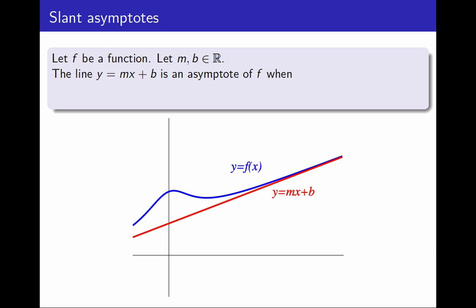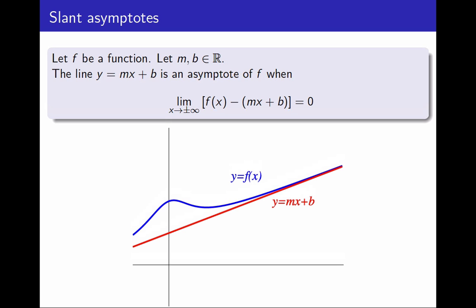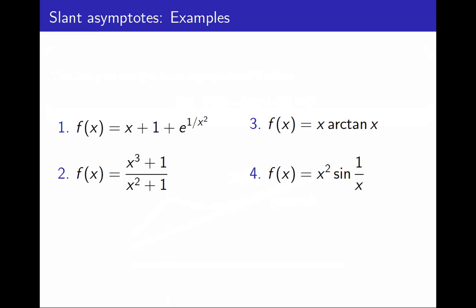Finally, the third type: slant asymptotes, meaning neither horizontal nor vertical. I have a function f and a line described as y equals mx plus b, where m and b are constants. Some people impose that m is not zero, since otherwise it would be horizontal — I prefer to think of horizontal asymptotes as a particular case of slant. For the line to be an asymptote of f, using the idea that the two become arbitrarily close, I write the condition that f minus (mx + b) — the vertical distance between the two graphs — has limit zero as x approaches infinity or minus infinity. It is enough that just one of these is zero. There are many types of functions with slant asymptotes, and in the next videos I will work out examples of how to compute them given the equation.